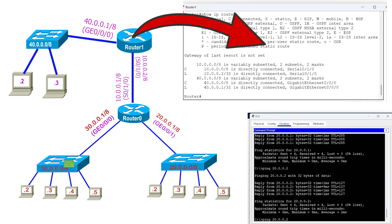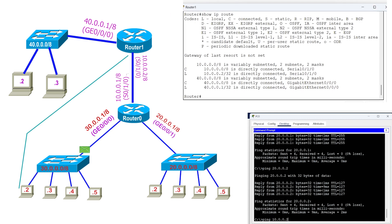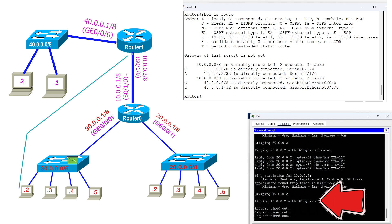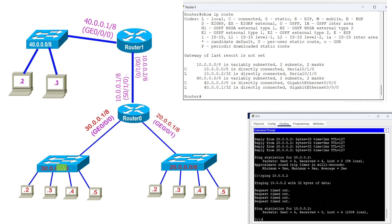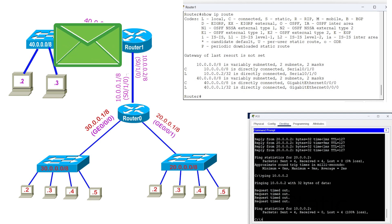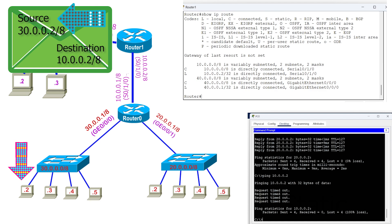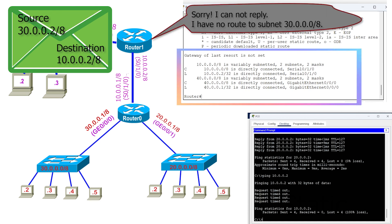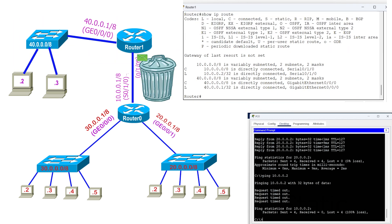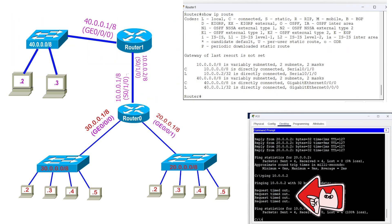Now let us check connectivity with the IP configured on another router's interface. As we can see, we did not get a reply. The ping command sends ICMP echo messages containing source and destination addresses. The destination device uses the source address to reply. The source address of the ICMP echo message sent by this PC is 30.0.0.2. The other router does not know how to reach this address, so it discards the message and the PC gets no reply.